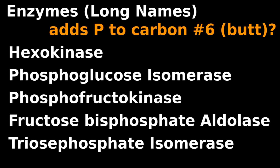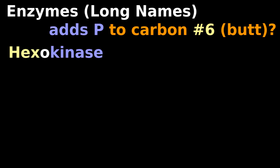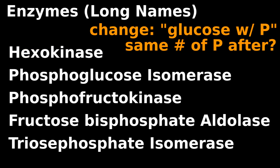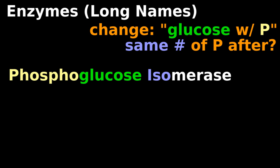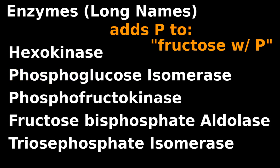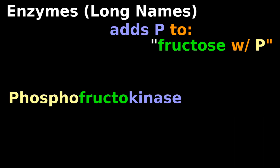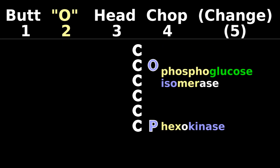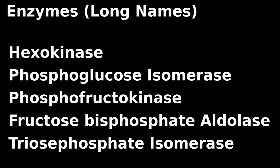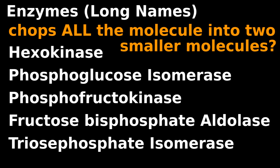Enzymes: Which enzyme adds a phosphate to the sixth carbon? Hexokinase. Which enzyme changes this glucose with a phosphate, leaving the same number of phosphates afterwards? Phosphoglucose isomerase. Which enzyme adds a phosphate to this fructose with a phosphate? Phosphofructokinase. Butt, o, head.